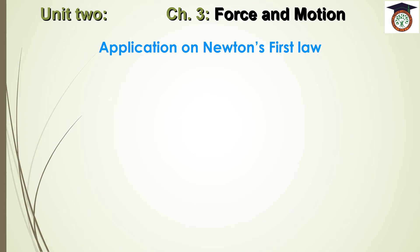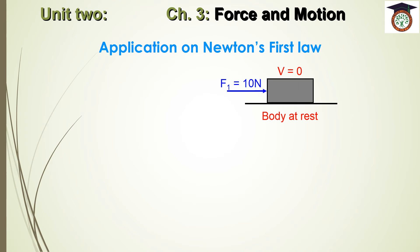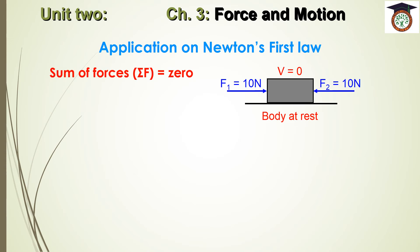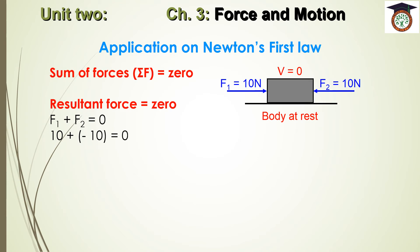Now we have an application of Newton's First Law. If an object is at rest with velocity equal to zero, and a force of 10 N acts from the left side and another force acts from the right side along the same line of action, then ΣF = 0. So F1 + F2 = 0; since F1 = 10 N, then F2 = -10 N because it acts in the opposite direction. The two forces cancel each other and the resultant force equals zero.